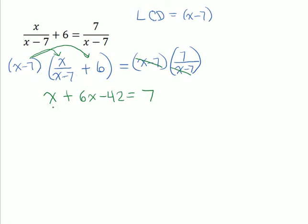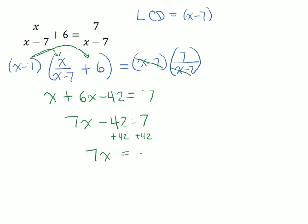Now we have some like terms on the left-hand side. x and six x add up to give us seven x, and we still have our minus 42, equal to seven. We're going to add 42 to both sides of the equation. Negative 42 plus positive 42 is zero, and seven plus 42 is 49. So it appears at first glance that x is going to be seven.